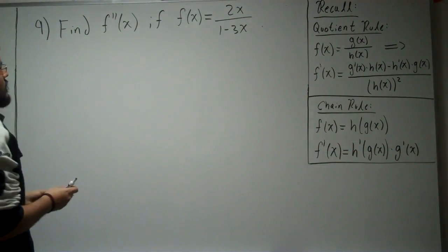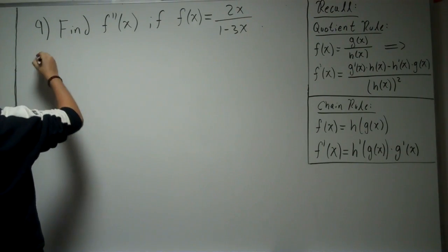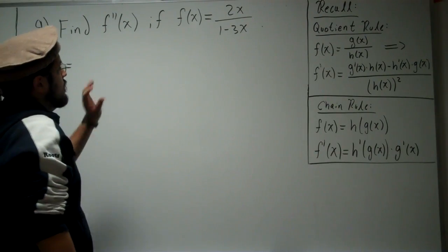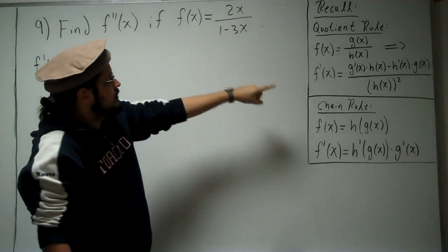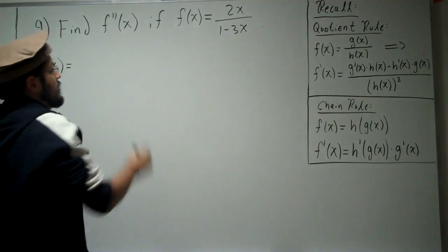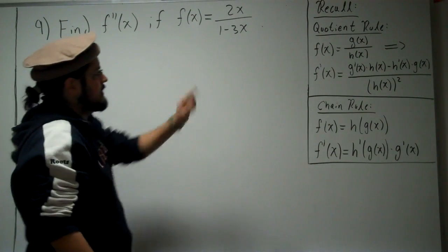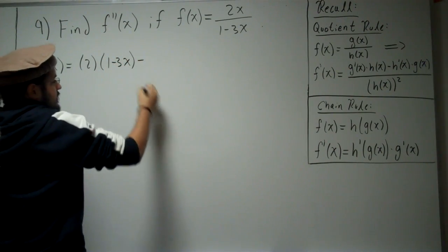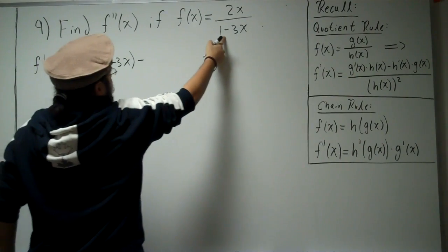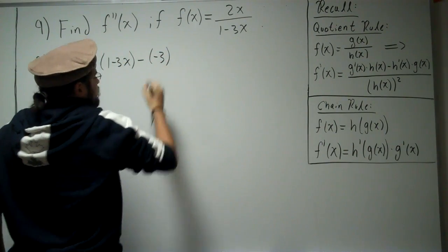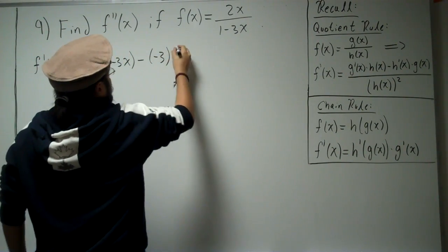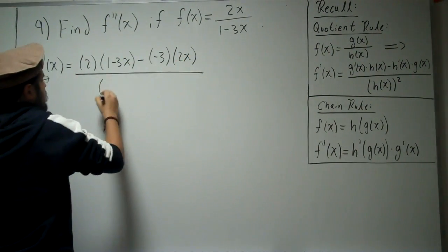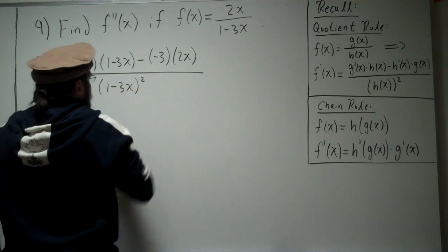Let's go ahead and work this out. To find the first derivative, f prime of x, we apply the quotient rule. Take the derivative of the top, which is 2, times the bottom, minus the derivative of the bottom, which is negative 3, times the top, all divided by the bottom squared.